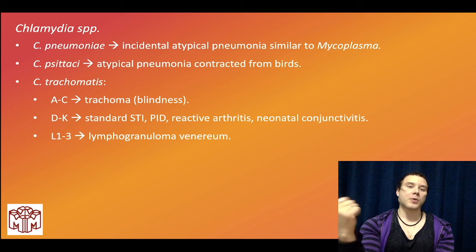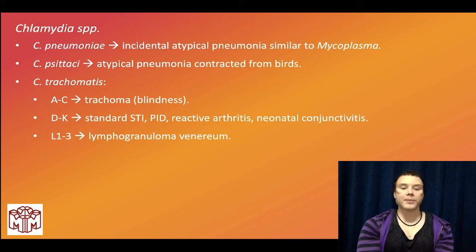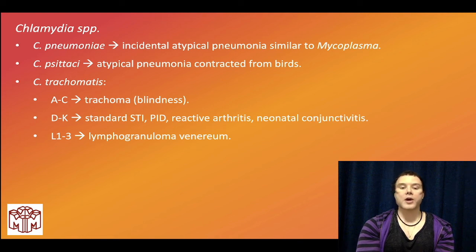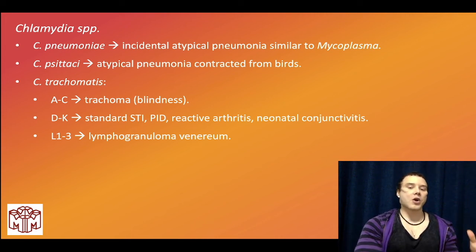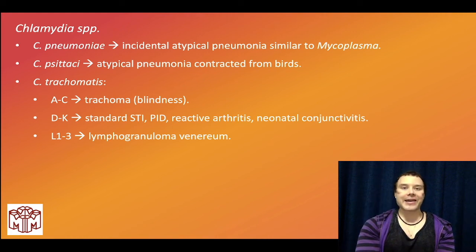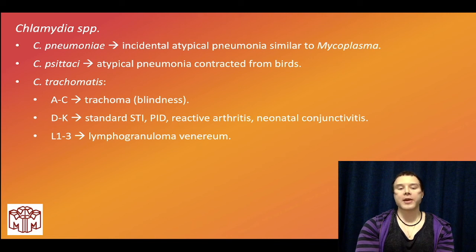Gonorrhea will show gram-negative diplococci. Chlamydia trachomatis D through K can cause reactive arthritis — the triad is urethritis, polyarthritis, and i-itis (conjunctivitis, anterior uveitis, or episcleritis). Gonococcus doesn't cause reactive arthritis — it causes a unique gonococcal arthritis. Also, ophthalmia neonatorum (neonatal conjunctivitis) can be caused by Chlamydia trachomatis.